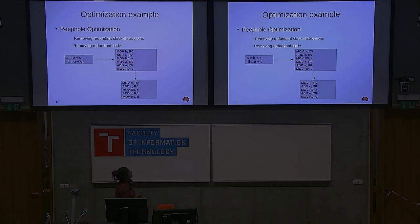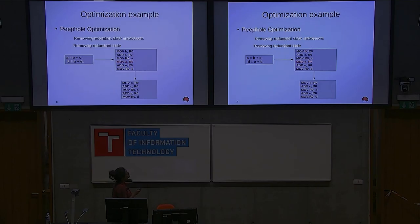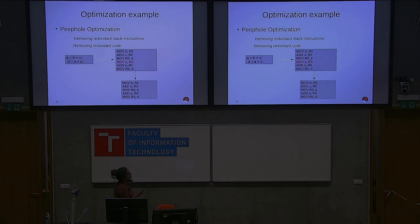Then we have peephole optimization, which works on machine-dependent intermediate representations. After your code is converted into assembly code, it tries to find redundant stack instructions to remove. For example, if A equals B plus C and then D equals A plus E, B is moved to R0 and C is added to R0, then R0 is moved into A. In the next operation, A is moved back into R0 — but R0 already has that value, so that move is redundant and can be eliminated.